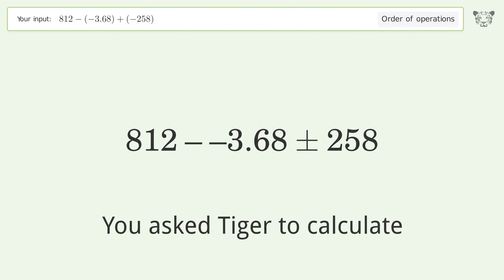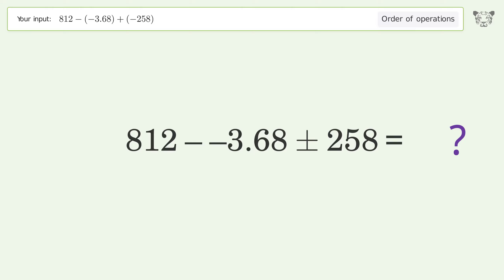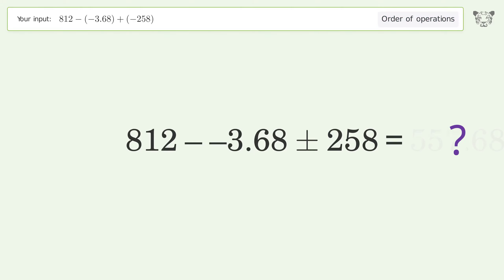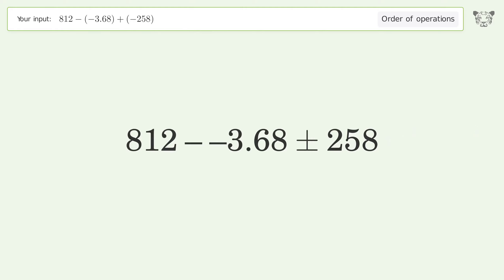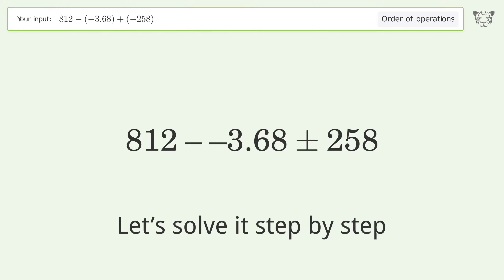You asked Tiger to calculate. This deals with the order of operations. The final result is 557.68. Let's solve it step by step.